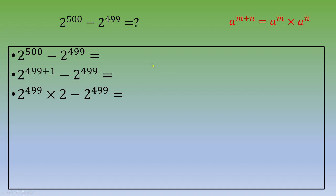Now you've got a common factor, so you can factorize: this is 2^499 times (2 minus 1), and you end up with 2^499. Thanks for watching this video, please don't hesitate to leave me comments, and I'll see you in the next video.